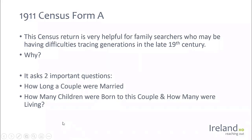Looking at the 1911 census — there are two additional questions asked. How long were a couple married, and how many children were born to this couple: how many were born alive and how many are still living? Those questions are very useful. If we know the number of years a couple have been married but haven't found a marriage record, it narrows down those years. The number of children born and still living can also indicate death records as well as civil birth records.